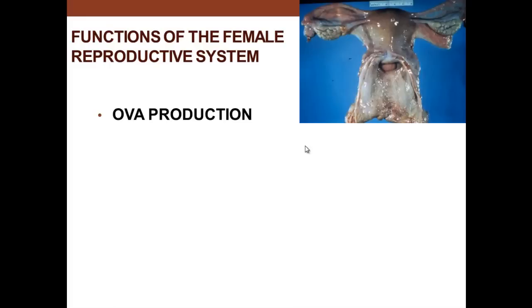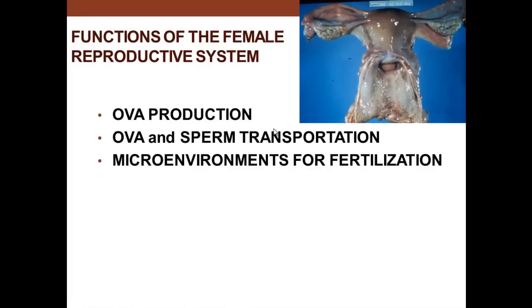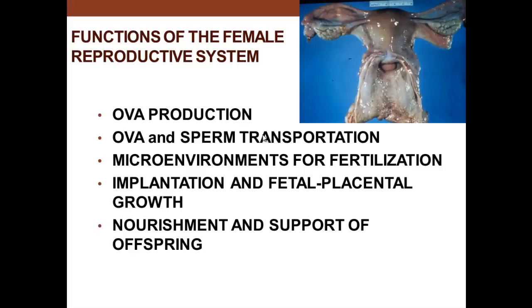One function is to produce ova. It also has to transport not only ova but also sperm. It has a microenvironment associated with fertilization — fertilization occurs in the uterine tube. Implantation and placenta growth is a requirement, as well as nourishment and support of the offspring. If she doesn't get pregnant, or after a baby is born, the system repeats the entire process.